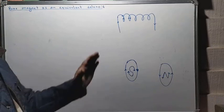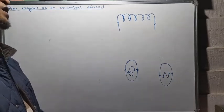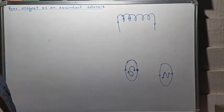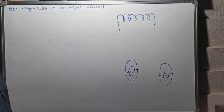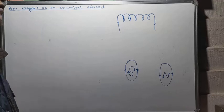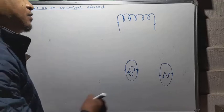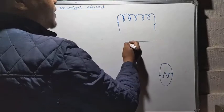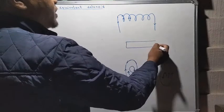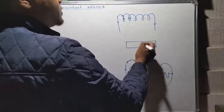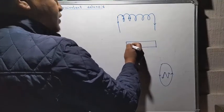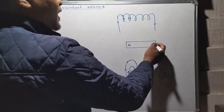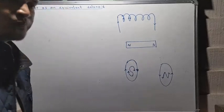Please remember that whenever a current is passing through a coil or through a solenoid, the solenoid always behaves like a bar magnet, because in a bar magnet we have two poles - one is a north pole and another is a south pole.